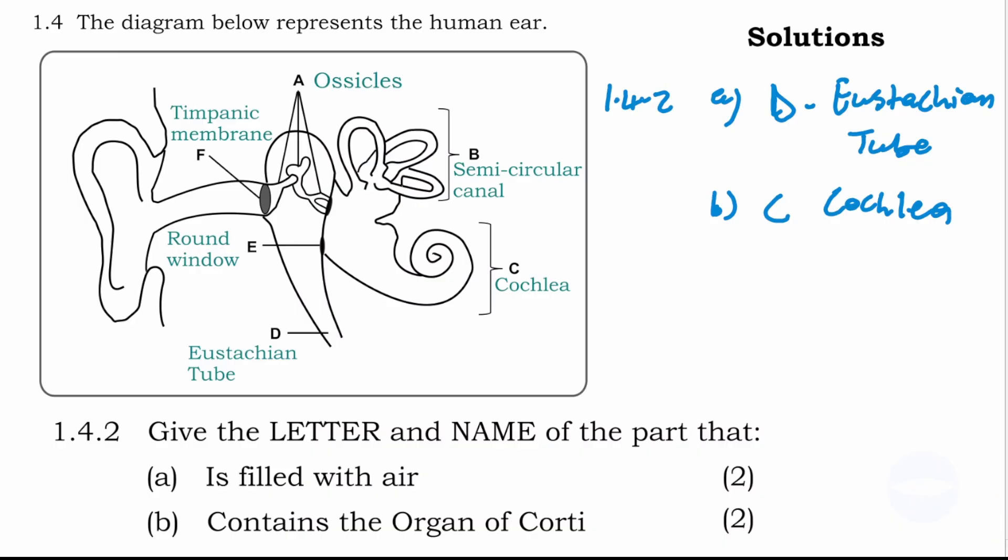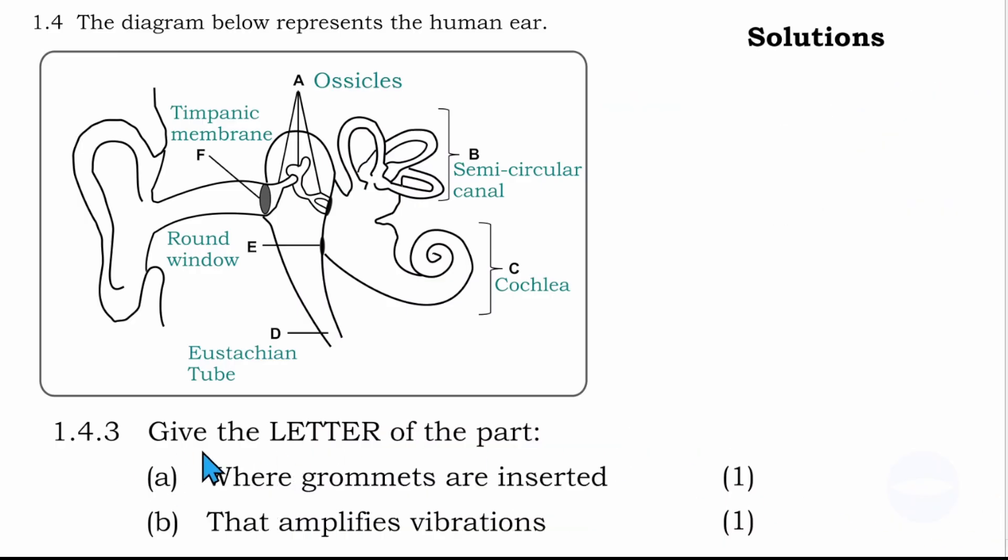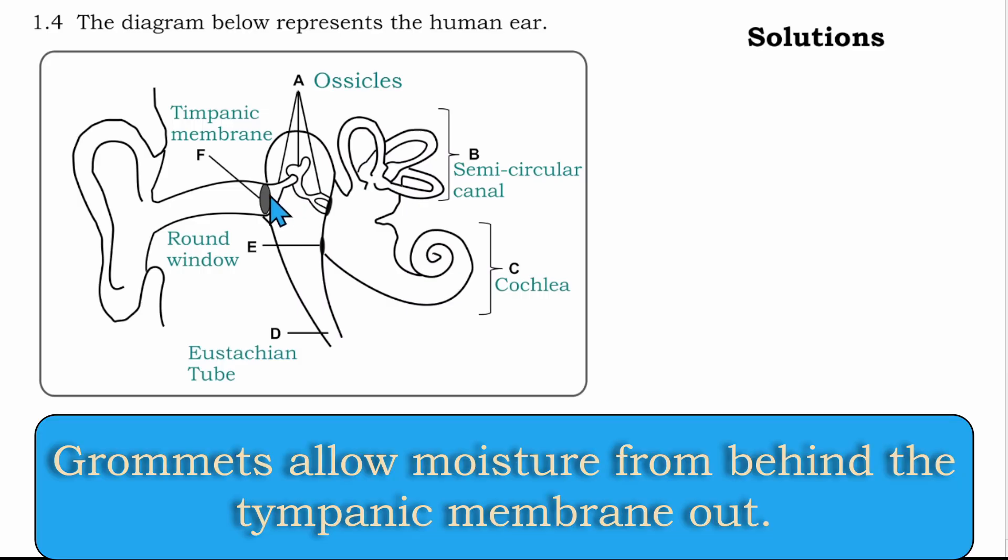The next question says give the letter of the part where the grommets are inserted. The grommet helps, especially in children if they have a problem with the ear. This tube is inserted in the ear, passing through the tympanic membrane. If there is moisture in the middle ear, this tube will take out the moisture. It drains the moisture.